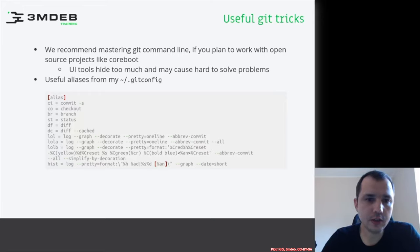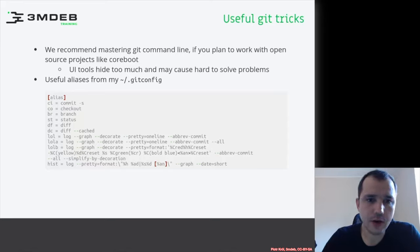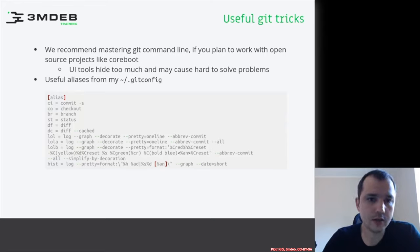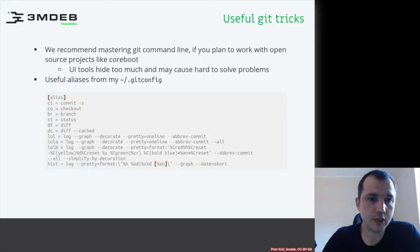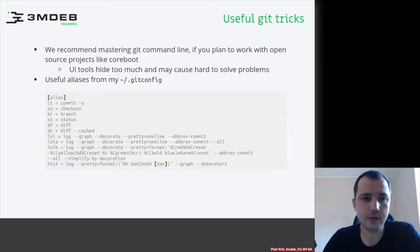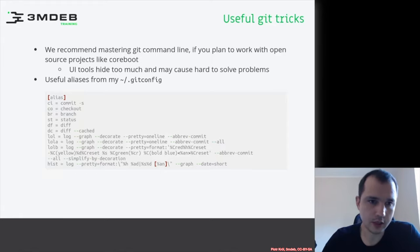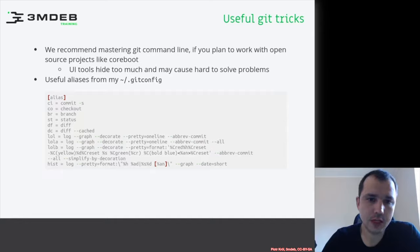To simplify that, I've been using for more than 10 years a set of aliases — for commit and signing, for checking out, for branching, for checking status, for checking differences, for checking differences already in staging, and also very useful stuff around the log command which gives you the ability to draw cool graphs in the console. Let me present those aliases to you.